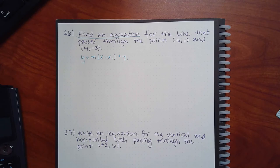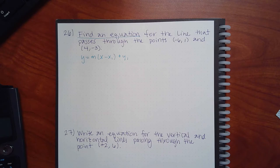This problem does give me coordinates, so I know what x1 and y1 are. I can pick whichever point I want to use — either (6, 1) or (4, 3) — I just can't mix them up. So I have two points to choose from for x1 and y1.